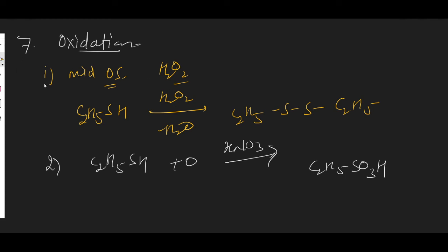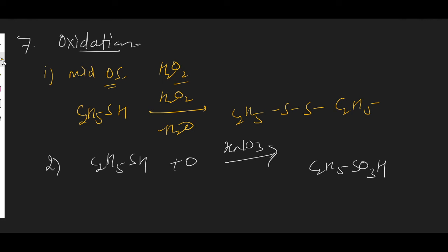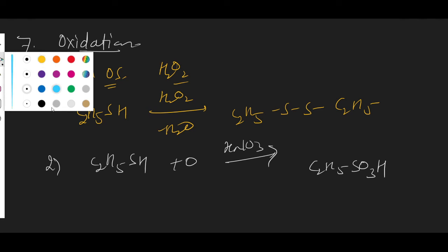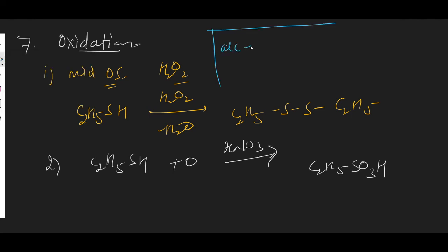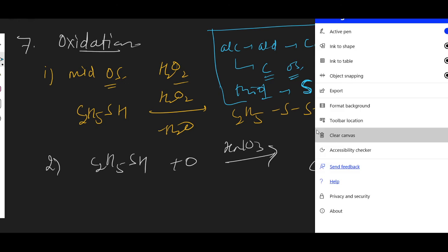There is also a difference between the oxidation of alcohols and thiols. In the case of alcohol, oxidation first converts it to an aldehyde and then to a carboxylic acid — meaning the oxidation state of carbon increases. But in the case of thiols, it is the oxidation state of sulfur that increases, not carbon. That is the key difference between the two.